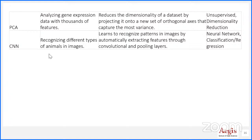Thanks to Professor Geoffrey Hinton at the University of Toronto and his student Ilya, who is now a main contributor to building ChatGPT, these folks pioneered this field. CNN has surpassed human-level accuracy in terms of object detection and image classification.